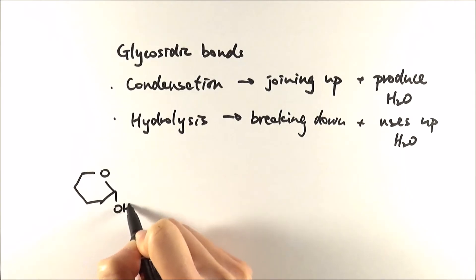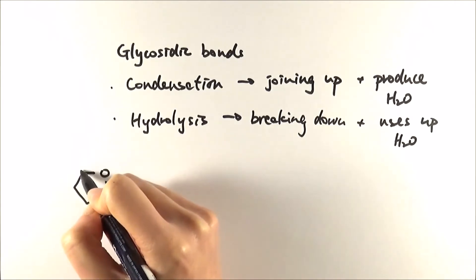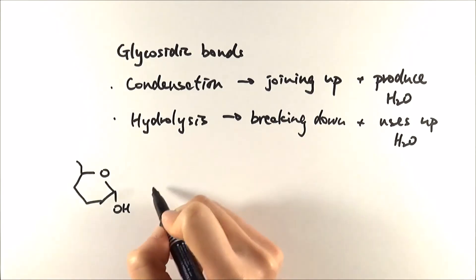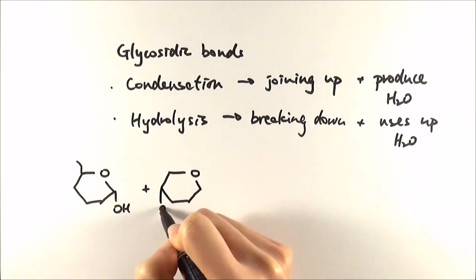So let's say that we have two alpha glucose molecules, and to just make it nice and simple I'm just going to skip the rest of the molecule and just do it this way.